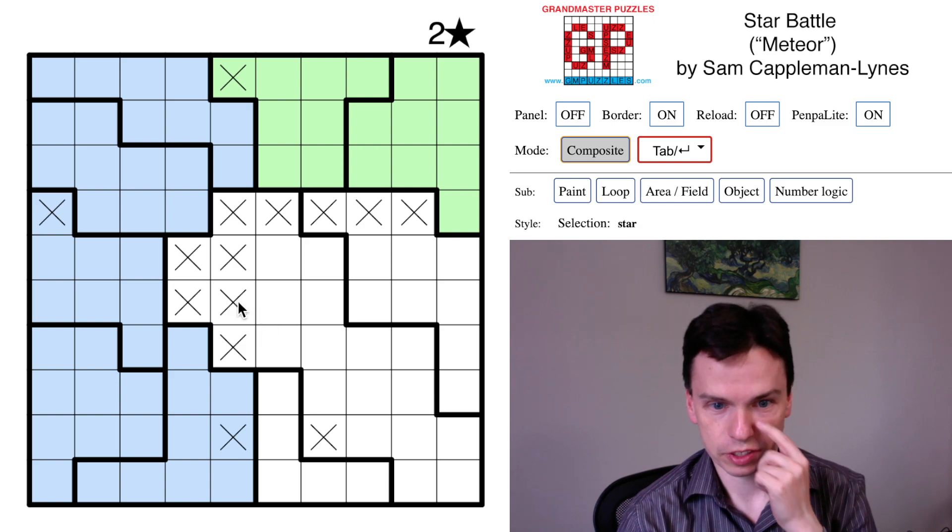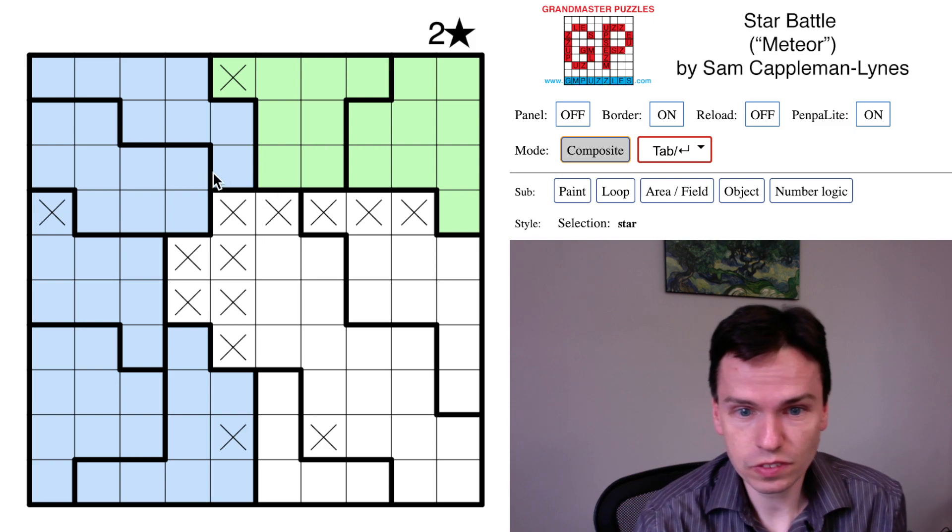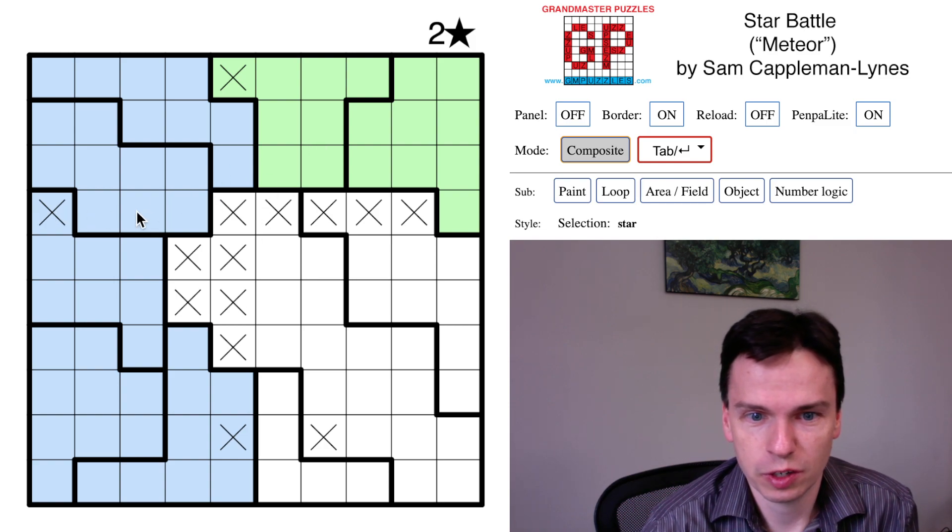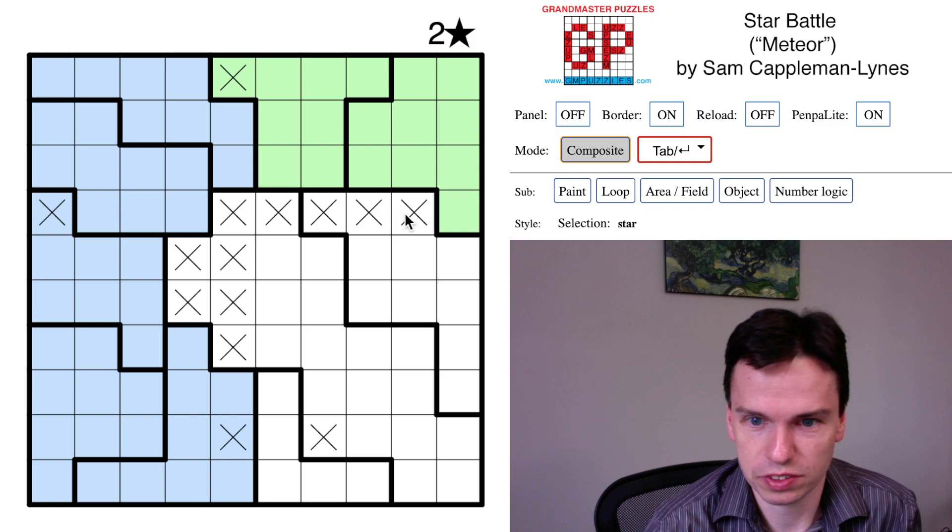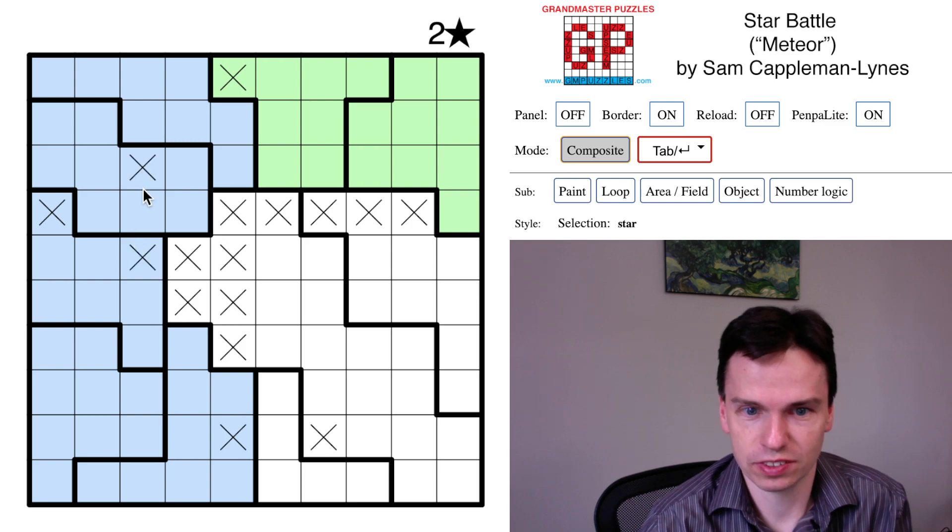This gives a few different ways to think about the star battle steps from here. One of the things which was a first point of tension from just this fourth row is there has to be at least one star in these three cells. So a cell like this and a cell like this aren't able to be filled in.